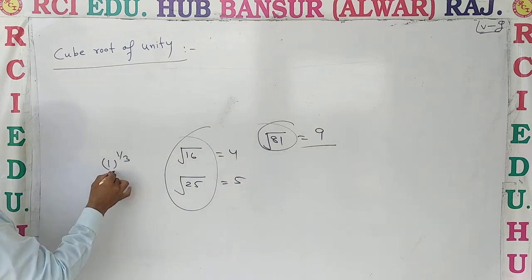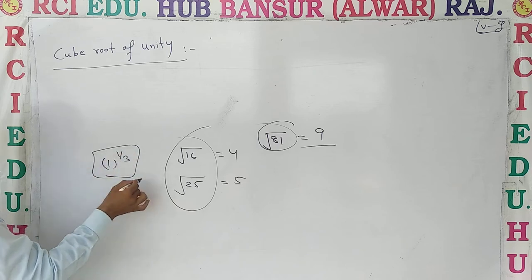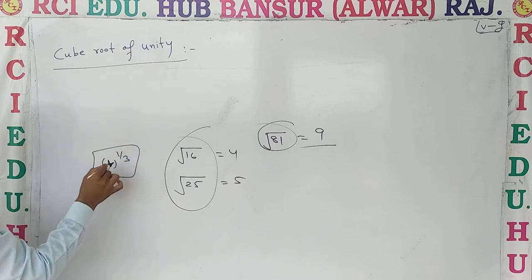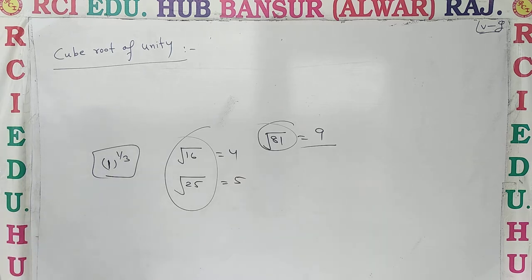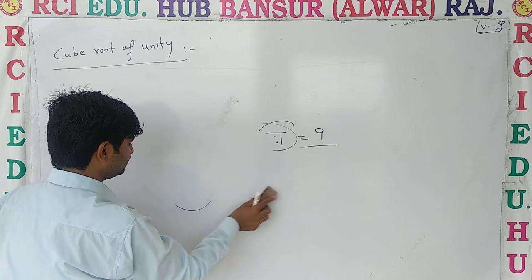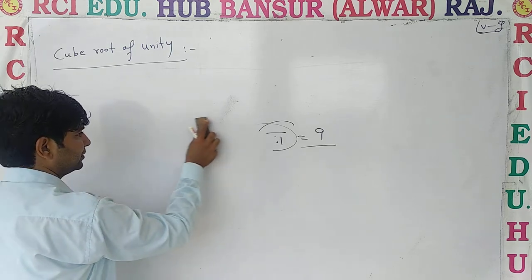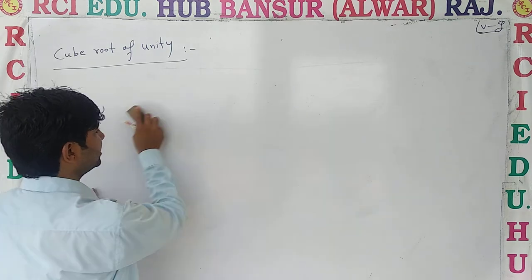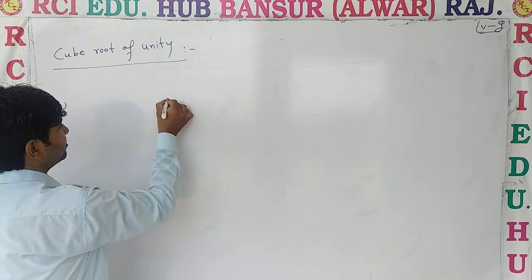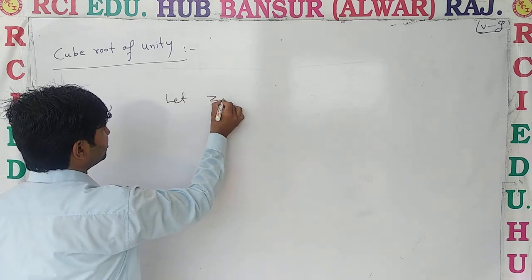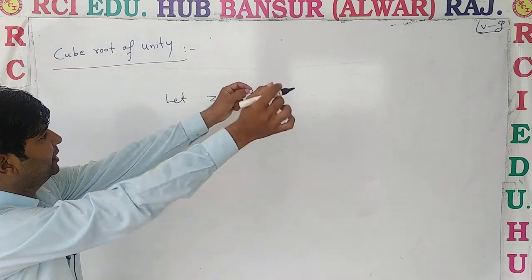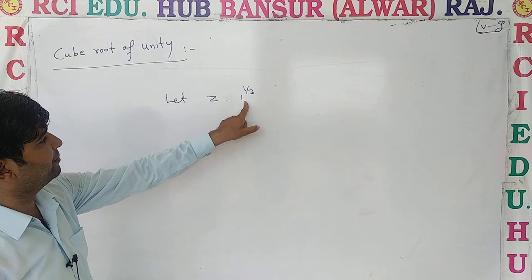One's power is 1 by 3. What is cube root of unity? Unity means 1. So what do we do with cube root of 1? Let z equal to the cube root of unity, which is 1 to the power 1 by 3.